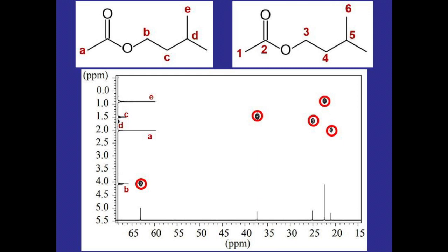For example, if we look at the signal being produced by hydrogen B and draw a straight line out to the dot that is directly to the right of it, and then draw a straight line down, we can see a signal there. That signal is being produced by the carbon that hydrogen B is directly bonded to. So in this case, that would be carbon three.